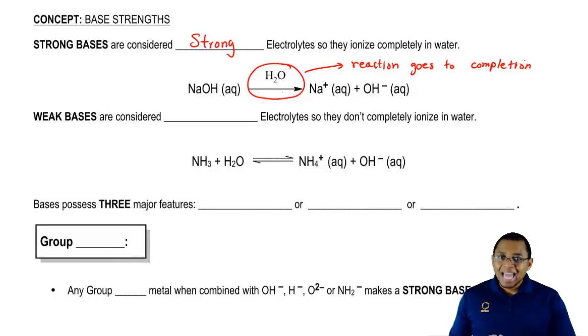So, all of the reactant will break down basically to 100% so we get those two ions. We get Na+, OH-.